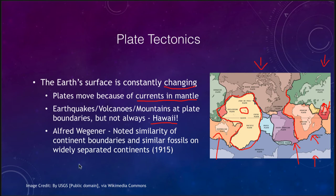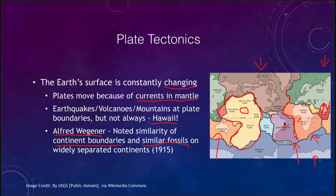Over a hundred years ago, Alfred Wegener noted that there was a similarity between some of the continental boundaries — primarily that South America and Africa kind of looked like they fit together like a jigsaw puzzle. You could imagine the coast of South America fitting right into Africa. Just the similarity of the boundaries might have been a coincidence, but finding similar fossils on both continents was also very important — fossils on the edges of South America and Africa that were quite similar, dating back hundreds of millions of years ago — and that was very important for putting forth the idea of continental drift and plate tectonics.